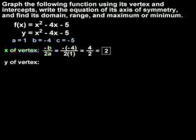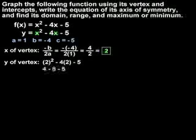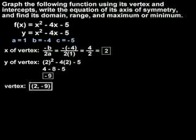Next, to find the y-coordinate of the vertex, we simply plug the x-coordinate of the vertex into our equation for x, and we have 2 squared minus 4 times 2 minus 5, or 4 minus 8 minus 5, which simplifies to negative 9. So the vertex of the parabola is the point (2, negative 9).